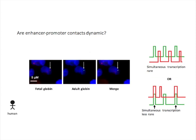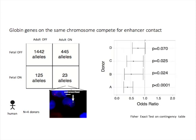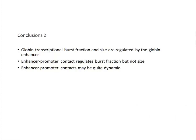Since the fetal and adult globin genes are so close together, if they fire at the same time, we can detect transcription sites on top of each other, as shown in this image. We examined human cells and performed a statistical analysis: are fetal and adult globin transcribed simultaneously by chance, or less than you would expect by chance? We found that fetal and adult globin tend to be transcribed together less than you would expect by chance. This suggests that globin genes located on the same DNA strand compete with each other for enhancer activity, and further supports our theory that enhancer-promoter contacts are formed, quickly broken, and reformed.